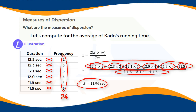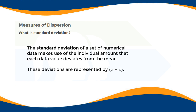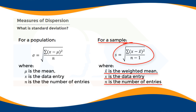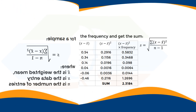Therefore, the mean of Carlo's running time is 11.96 seconds. This mean is very significant in computing the standard deviation. As defined, the standard deviation makes use of the individual amount that each data value deviates from the mean. Since we are working with a sample, the formula is: s equals the square root of the summation of (x minus the mean) squared, divided by n minus 1, where x-bar is the weighted mean, x is the data entry, and n is the number of entries.